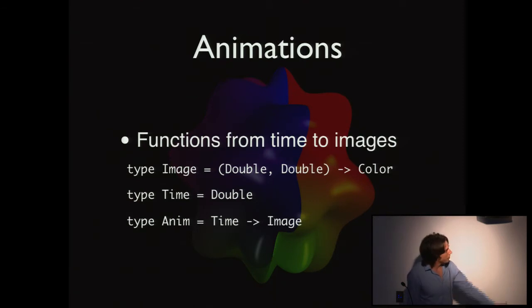We can naturally extend this idea to animations. They're simply functions from time to images. If image is double-double to color, and time is double, then type anim is time to image. Very simple stuff.